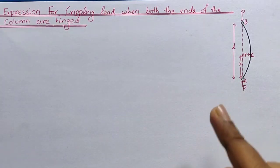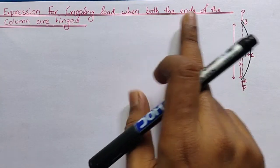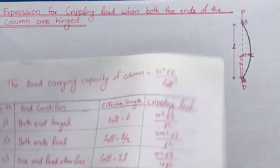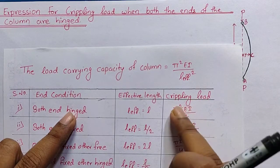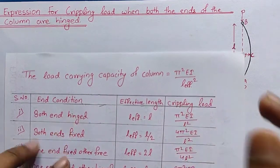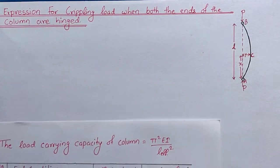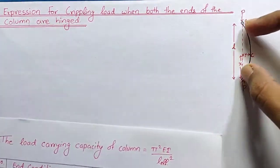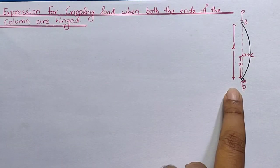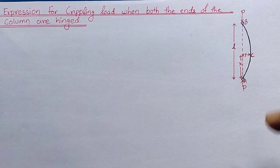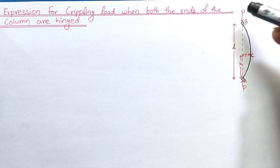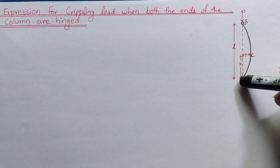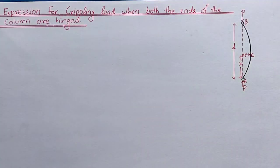The crippling load formula is π²EI upon L². In this video I will show you how to derive this expression. In the diagram, we have a column AB which is buckled due to the crippling load P along the section ACB.